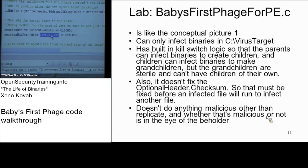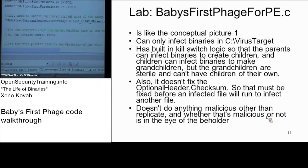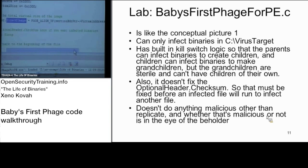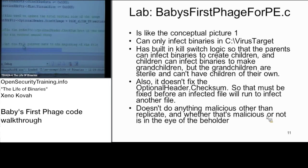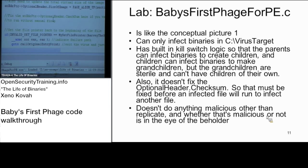Our total virus size is less than 0x1000, so that extra size in the header ensures our stuff gets mapped with the last section. We also fix up SizeOfImage: if SizeOfImage is too small — not equal to the last section's VirtualAddress plus VirtualSize — the data won't get mapped and the program will crash. There's also a checksum fixup: officially the checksum doesn't matter, but I was seeing weirdness where the virus wouldn't run unless I fixed it up.